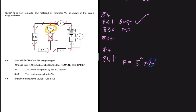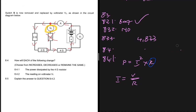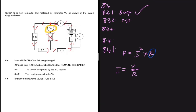When V2 replaces the switch, the current decreases. Using I = V/R, when the 1-ohm resistor is no longer in the parallel path, all three resistors — 3, 2, and 4 ohms — are now in series. The resistance was initially 4.833 ohms, but now it's 3 + 2 + 4 = 9 ohms. The resistance increased, so current decreased, and therefore the power dissipated by the 4-ohm resistor decreases.